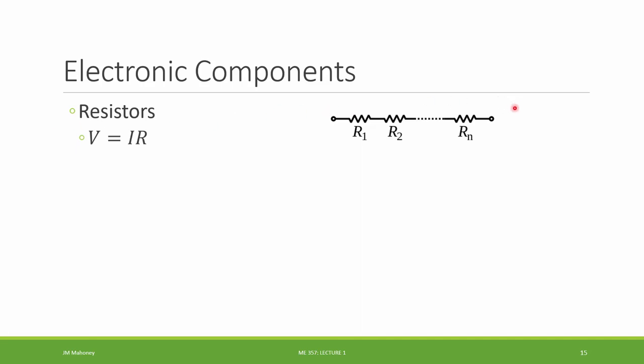But for right now, we want to look at the relationship for each of these components between the voltage drop across its component and what the current going through that component is. So starting with our resistor here,